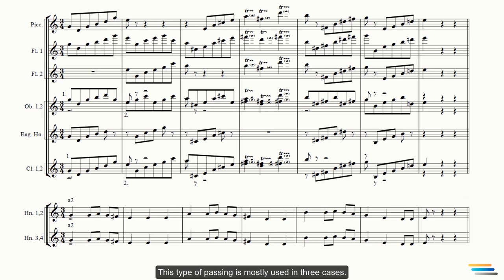This type of passing is mostly used in three cases. Sometimes the given passages are fast and there is no time for the performers to breathe. In this case, spaces are made for each performer to rest. A second reason is simply to create a stereo panning effect in the orchestra, that is, when the first and second oboe periodically pass the melody to each other. The third reason is to weaken the power of the woodwinds.